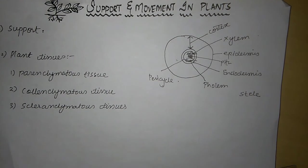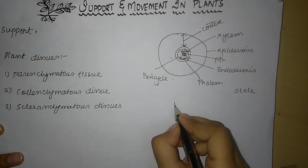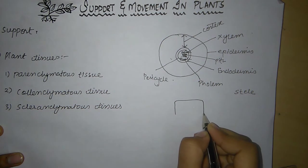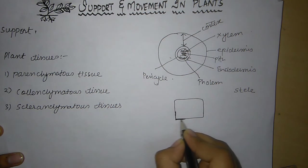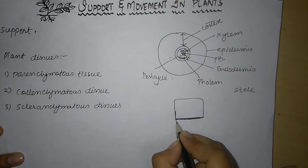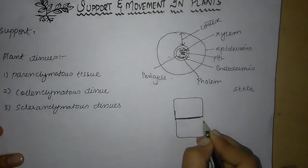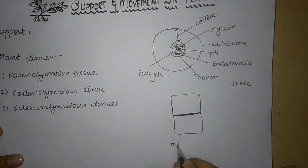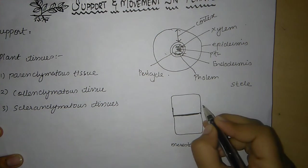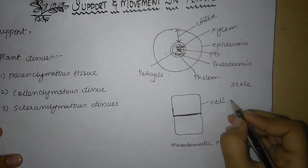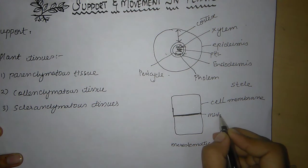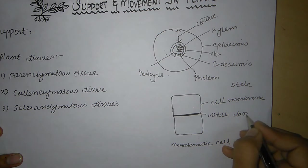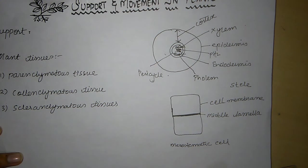Now I am going to show you the structure of the meristematic cell. This is the cell membrane. This is the middle lamella. So this is the structure of the meristematic cell.